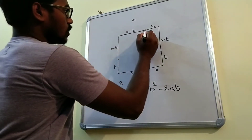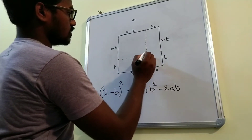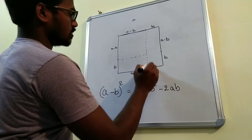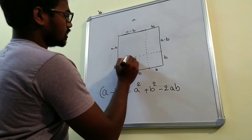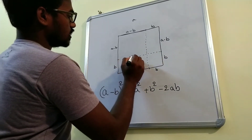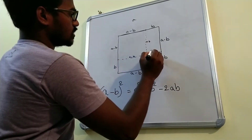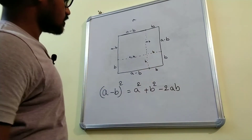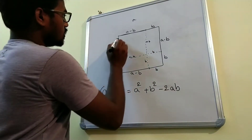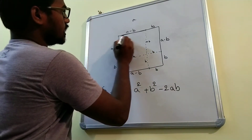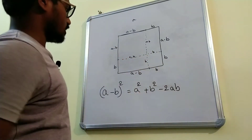Let's draw lines. This length is a minus b, this is a minus b, and this is b. As you observe, all these sides are the same length: a minus b, a minus b, a minus b, and a minus b.